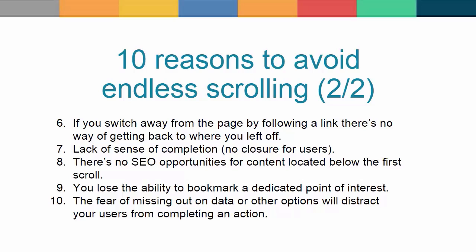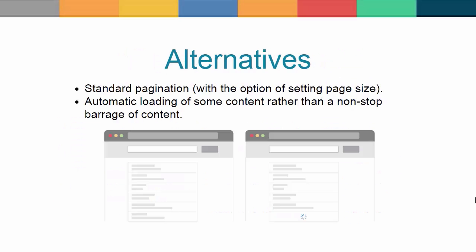Number 7: lack of sense of completion with no closure for users. Number 8: there are no SEO opportunities for content located below the first scroll. Number 9: you lose the ability to bookmark a dedicated point of interest. Number 10: the fear of missing out on data or other options will distract your users from completing an action. Using or not using endless scroll depends on how users will be interacting with your website.